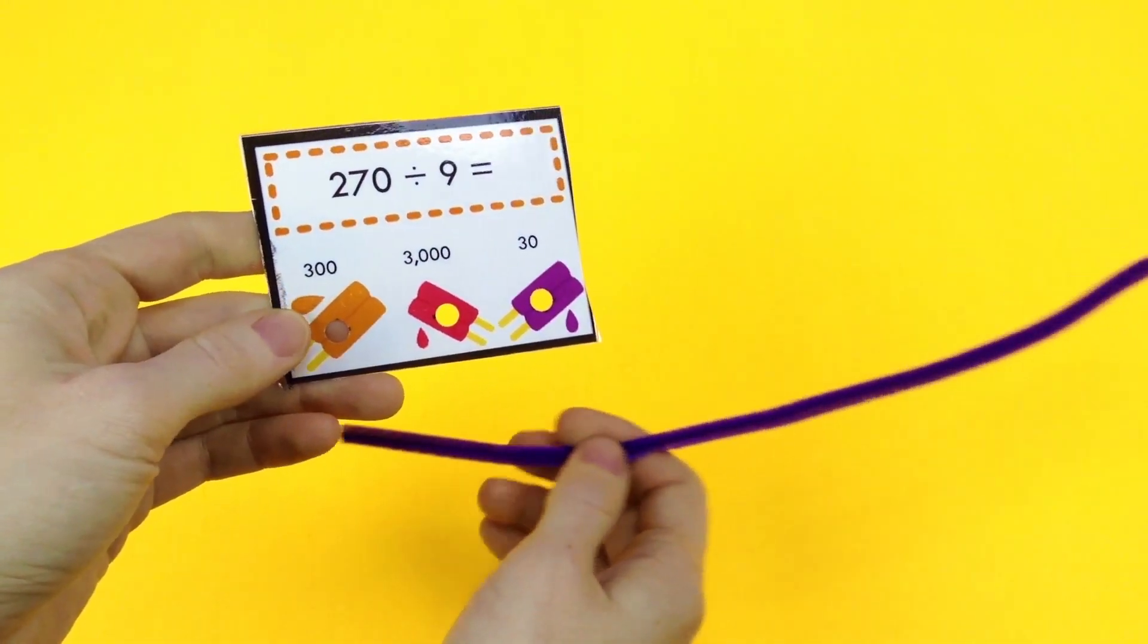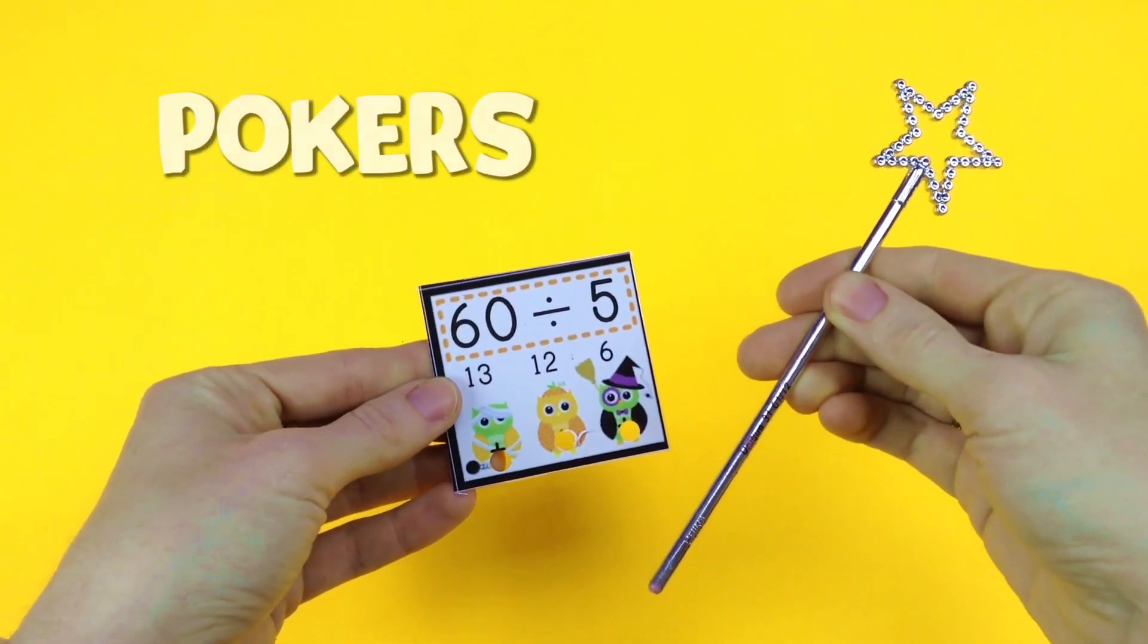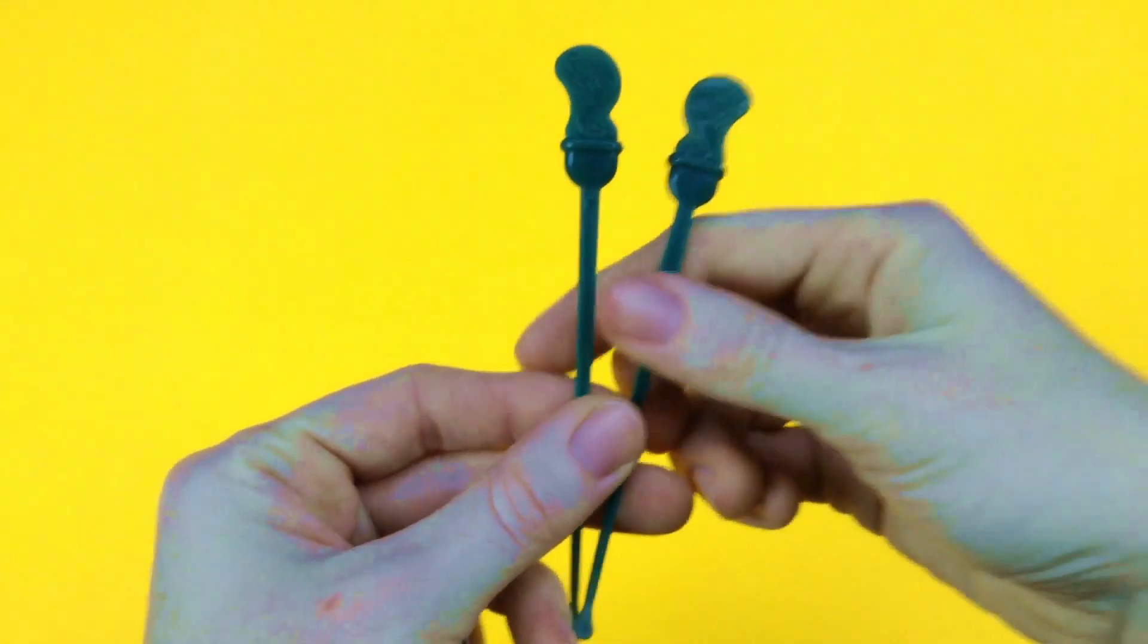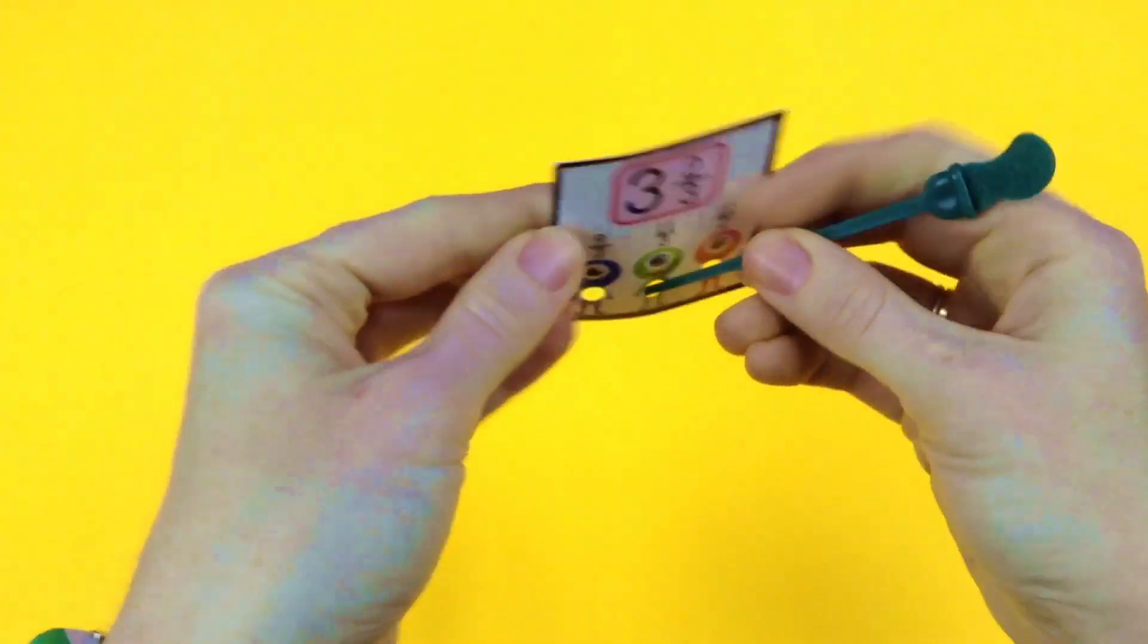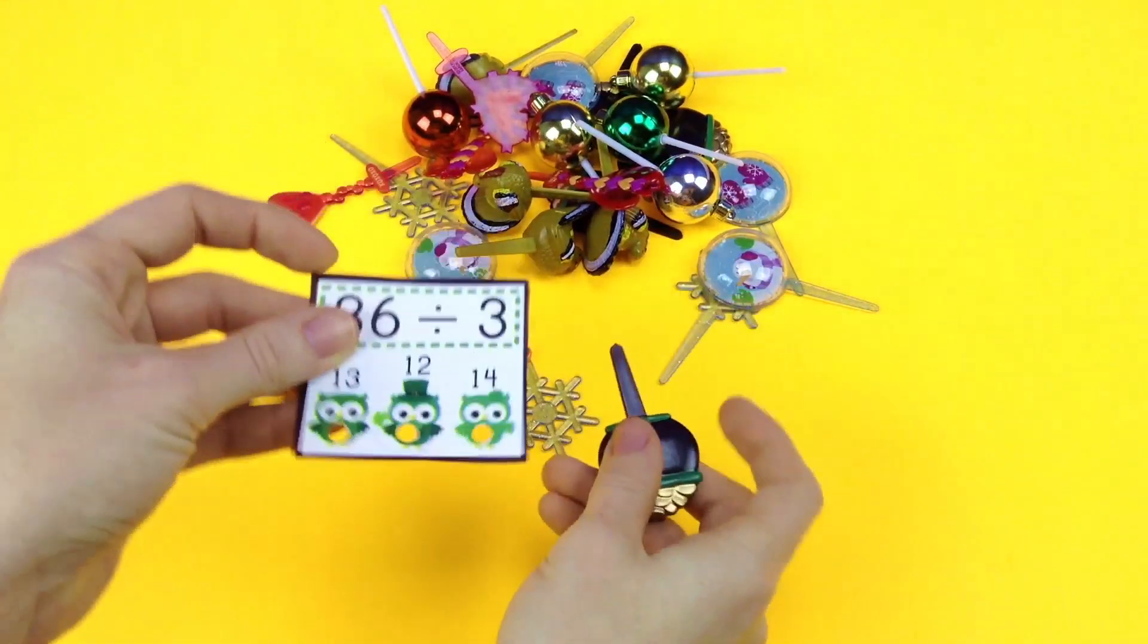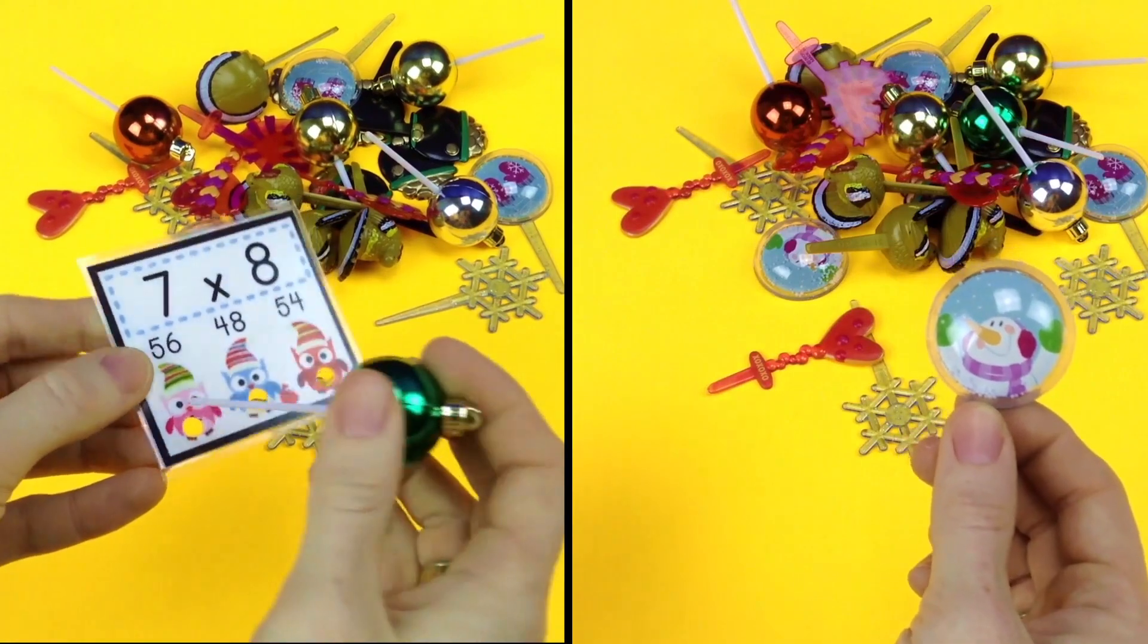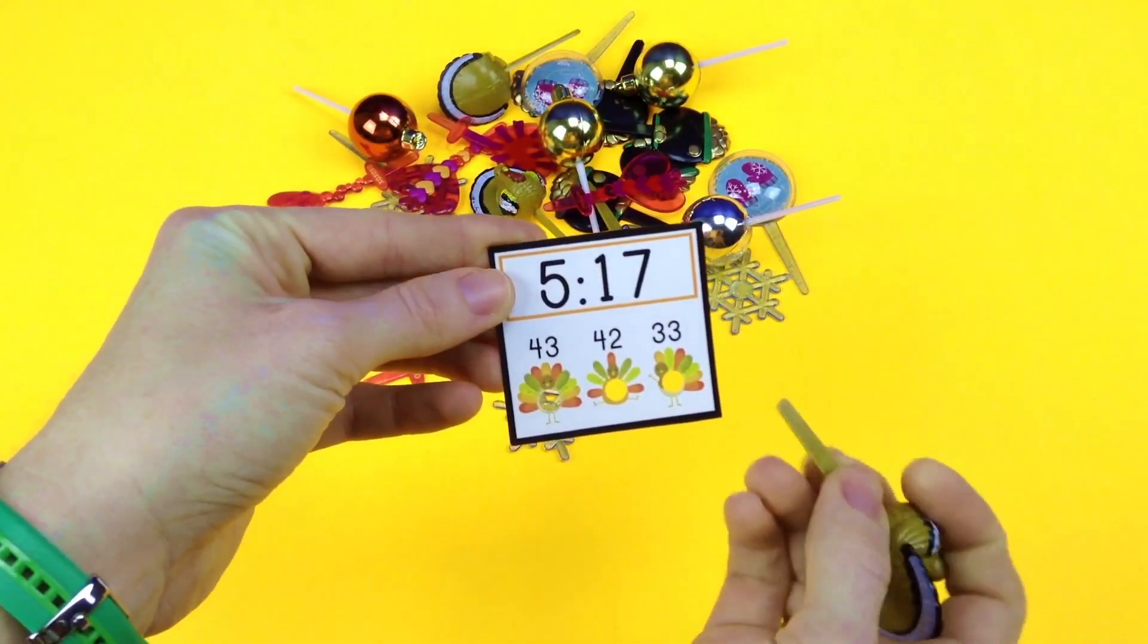For your students to play with the poke cards, they'll need some type of poker. Of course, you want to be careful as to what you use, but I found that coffee stirrers, you can get some from Starbucks that are really cute. And I really like getting cupcake picks from cake decorating places or Party City. And you can get seasonal ones to go with seasonal poke cards, which just makes it even more fun and engaging for the students.